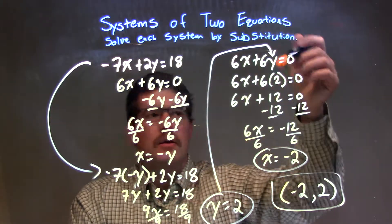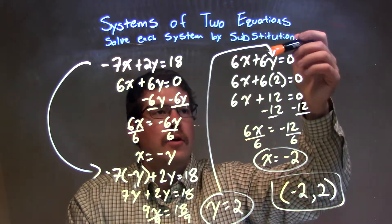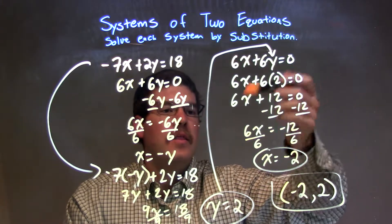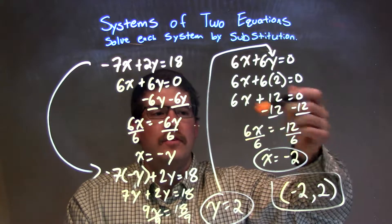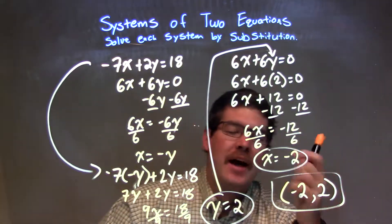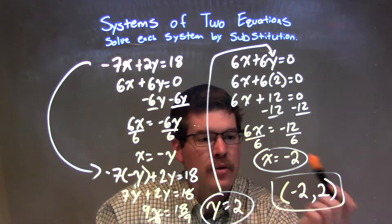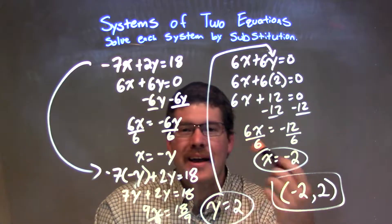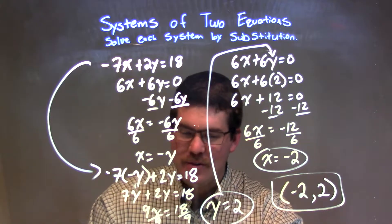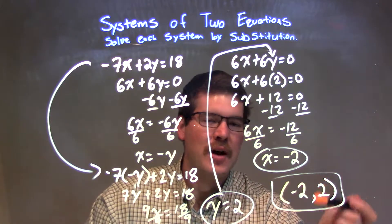From there, plug that into my second equation again. 2 goes in for y. 6 times 2 is 12, minus the 12 to both sides, then we had 6x equals negative 12, divided by 6 on both sides, and I had x equals negative 2. From right there, we have our coordinate point, our x and y values, so I wrote it right here. The final answer here, the solution to our systems of equations using substitution, is negative 2 comma positive 2.